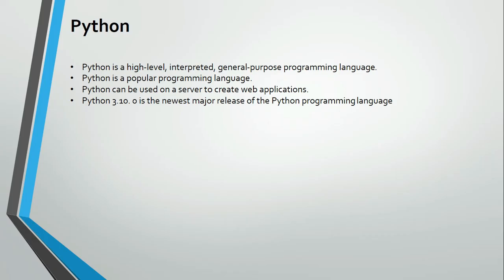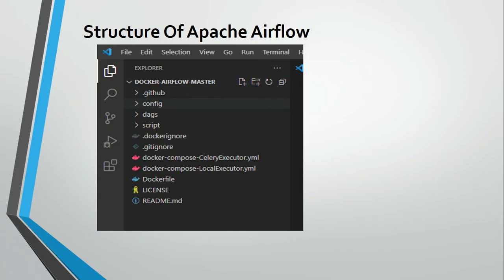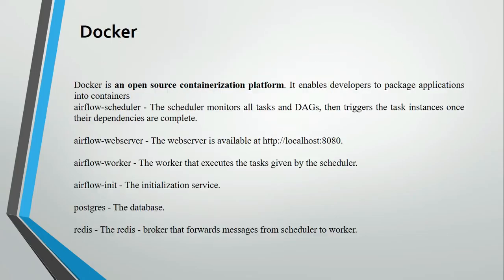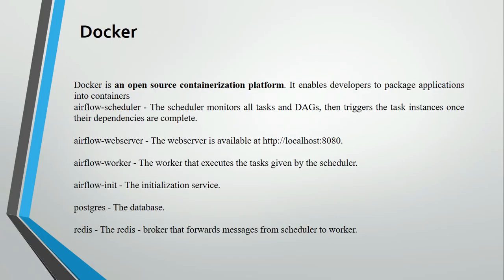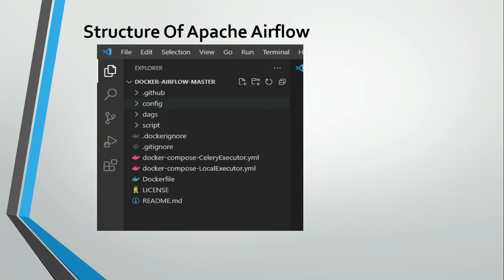This is the structure of Apache Airflow. In this video I'm showing you the structure — how Apache Airflow is organized and how you can add your Python files in Apache Airflow and automate them. The major part here is the YAML file. There are two YAML files: one is the Celery Executor and the second is the Local Executor. Whatever we see in Docker — web server, worker, init, Postgres, and Redis — all are available in that YAML file.